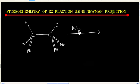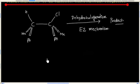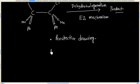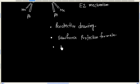What will be the product of dehydrohalogenation if the reaction follows the E2 mechanism? We need to write the product. There are many ways to derive it: we can use perspective drawing, Sawhorse projection formula, or Newman projection formula.